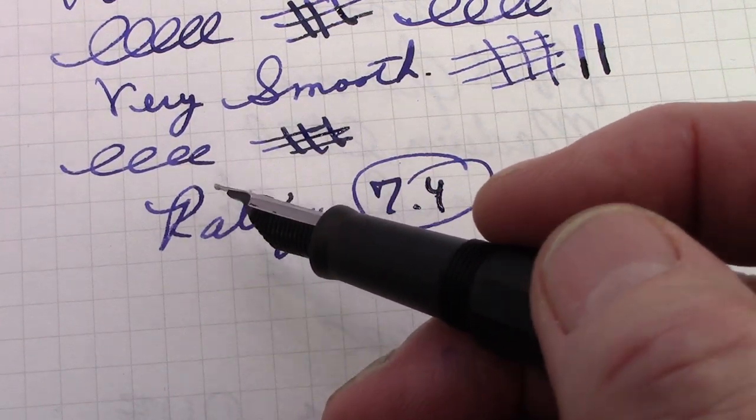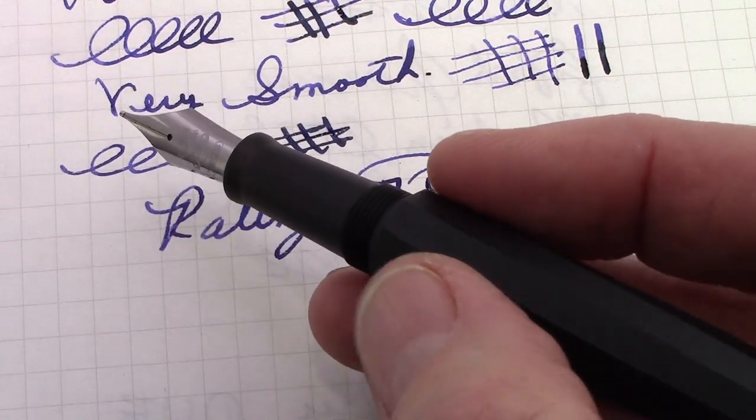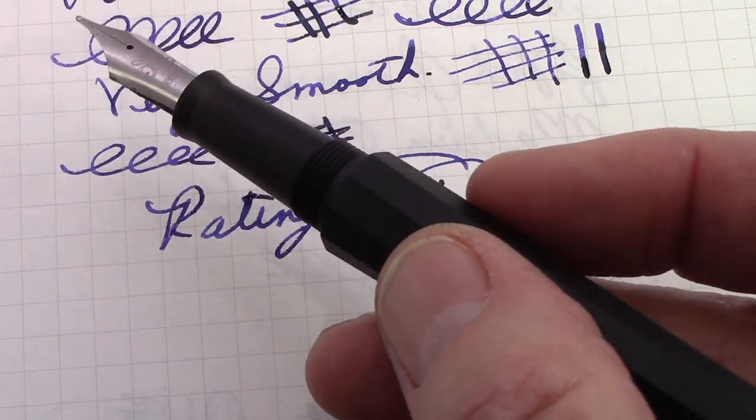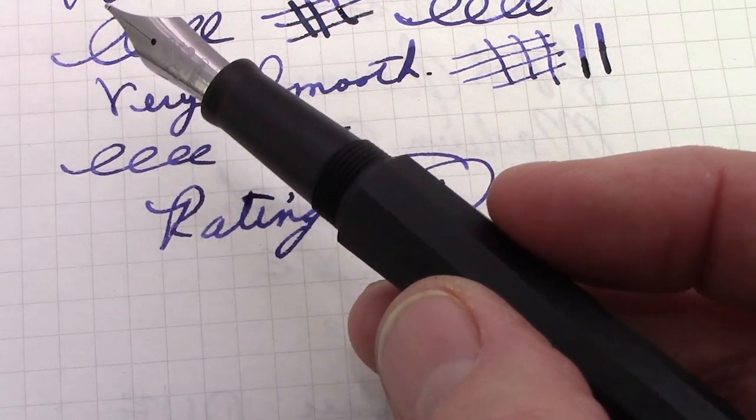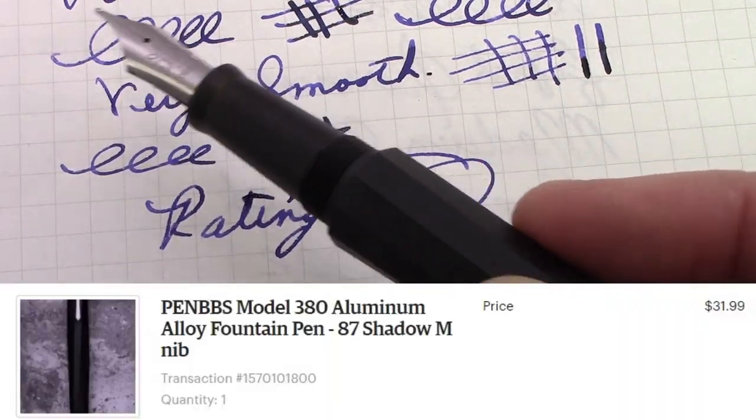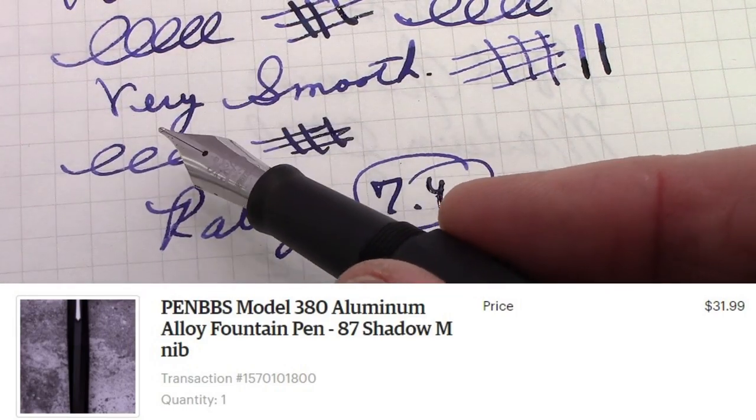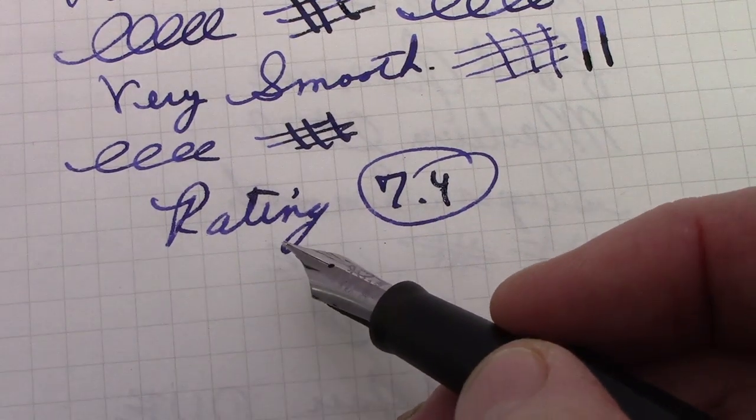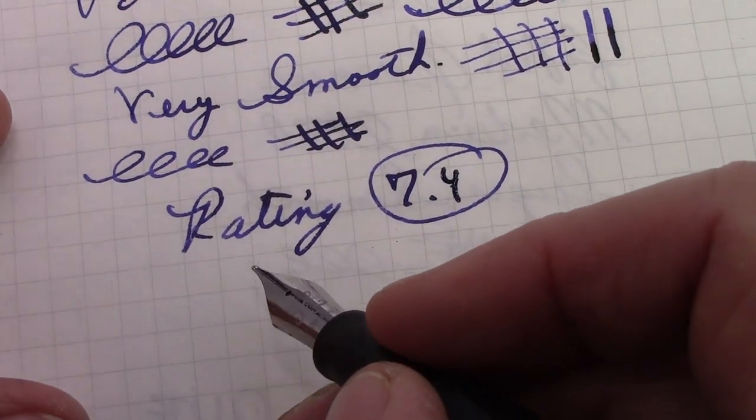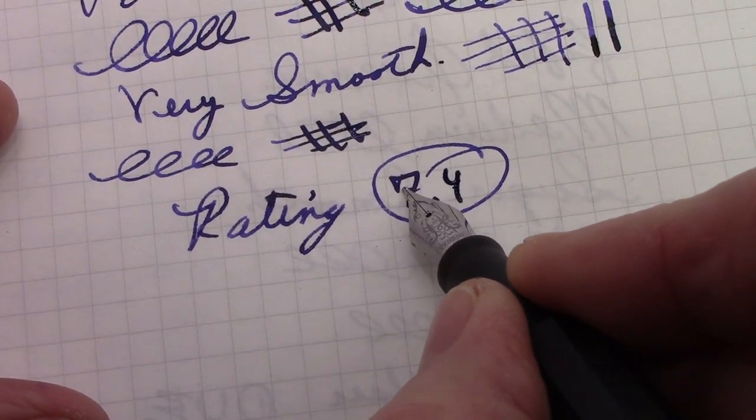And like I said, they could have beveled that edge and I don't think it would have detracted that much from the aesthetics or design of the pen. It may have added another step in manufacturing, but this pen is on the high end of what they're selling, you know, north of $30. So, you know, they can afford to do that. So that's my lowest rating of a PenBBS pen ever.